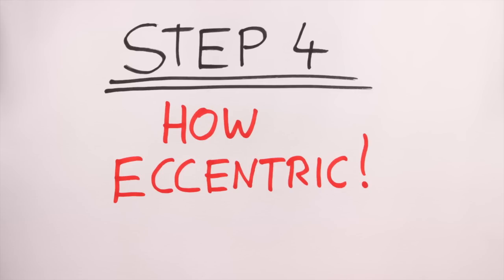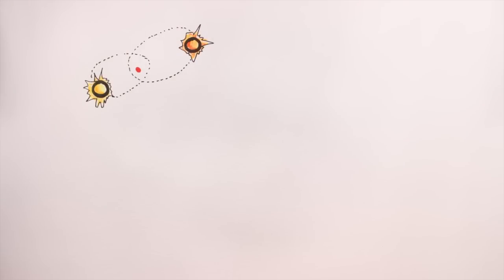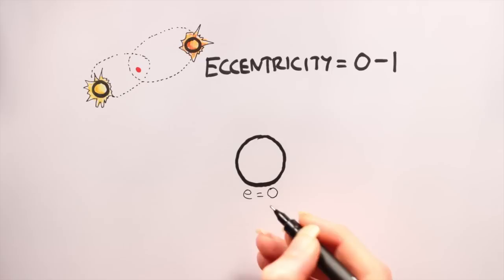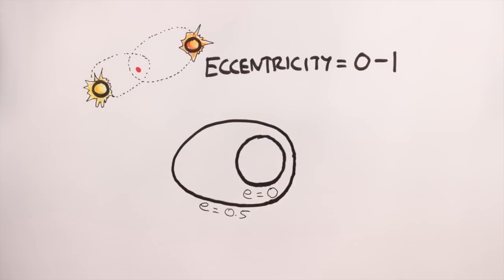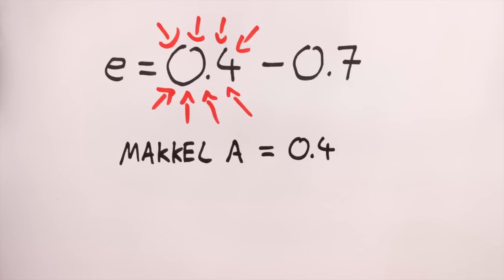Step 4, how eccentric! Binary stars also tend to orbit on very elliptical paths. Eccentricity is a measure of how elliptical an orbit is. The values here go from 0 to 1, with 0 being a perfect circle, and as the values approach 1, the orbit becomes increasingly more elliptical. Select an eccentricity between 0.4 and 0.7 for both your stars. Again, it's advised to tend towards the lower end of this range. So, let's give Mikkel A's orbit an eccentricity of 0.4, and Mikkel B, 0.5.